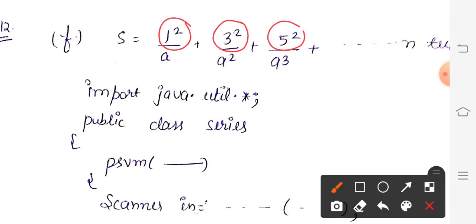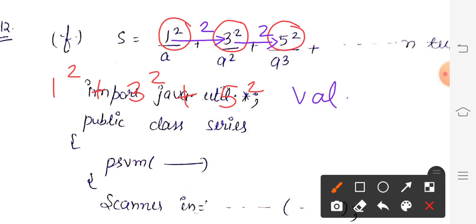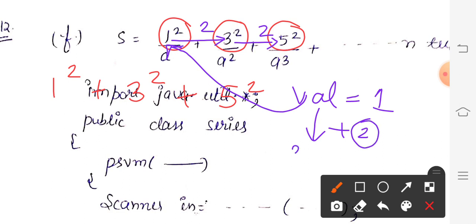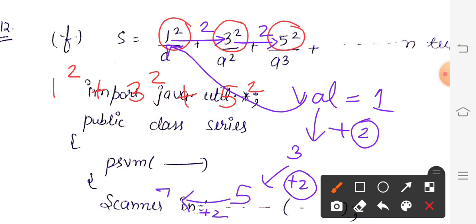Now for the numerator — look at the pattern: 1 square, 3 square, 5 square. From 1 to 3 there is an increment of 2; from 3 to 5 is also plus 2. So the numerator increments by 2 each time. We take a variable val, initially 1 — representing this first numerator value. Val increments by 2: 1 becomes 3, then 5, then 7, and so on.